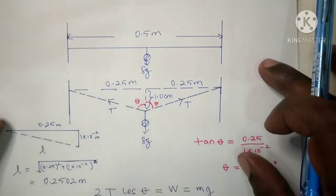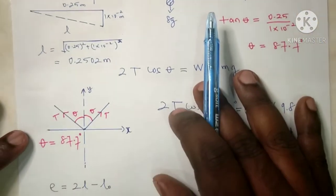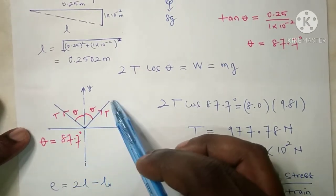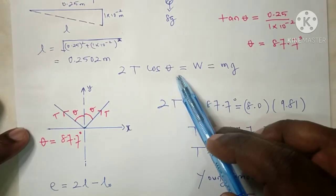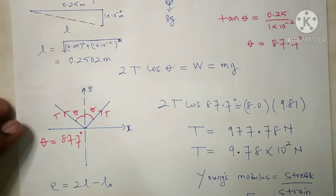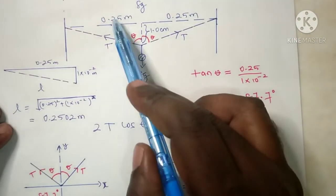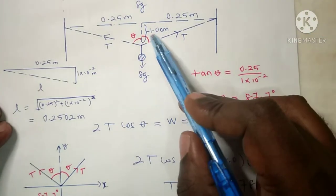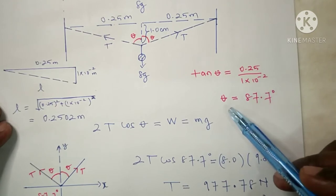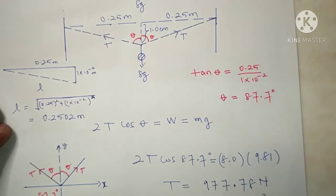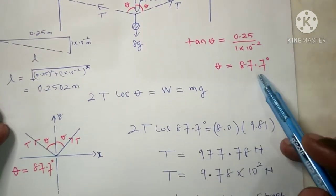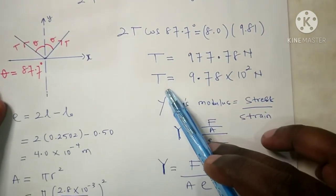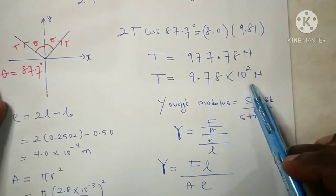From the free body diagram, we get 2T cos θ equals the weight, which equals mg. The angle here is calculated as opposite over adjacent: 0.25 m divided by 1 × 10⁻² m, giving 87.7 degrees. Substituting the angle into the formula gives the tension in the wire as 9.78 × 10² N.